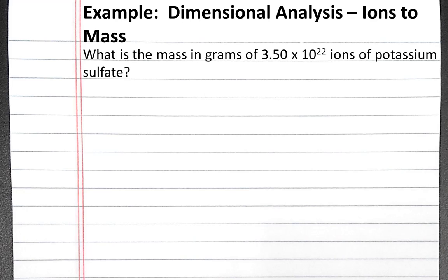In this example problem, we'll look at how to use dimensional analysis to convert from ions to mass of a compound. The problem states, what is the mass in grams of 3.50 times 10 to the 22nd ions of potassium sulfate?